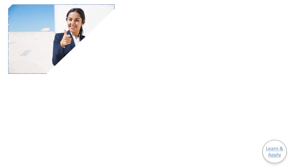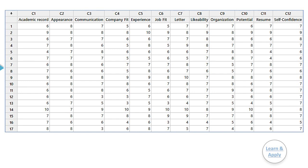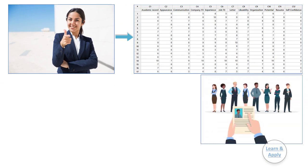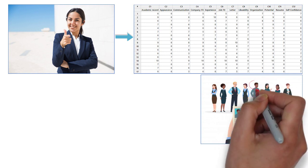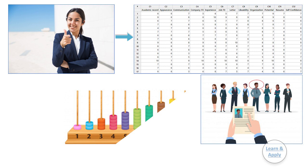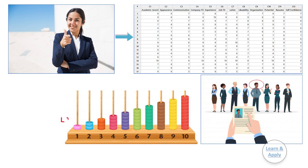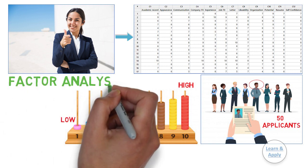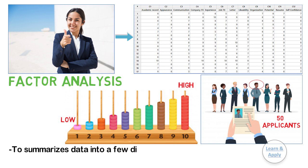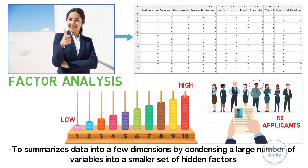For example, a human resource manager wants to identify the underlying factors that explain the 12 variables that the human resource department measures for each applicant. Human resource employees rate each job applicant on various characteristics using a scale of 1 as low through 10 as high. The human resource manager performs a factor analysis to summarize this data into a few dimensions by considering a large number of variables into a smaller set of hidden factors that are easier to interpret.